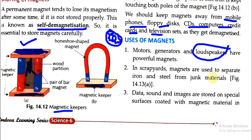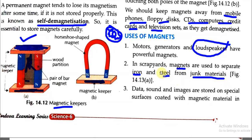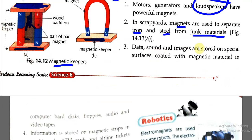In scrap yards, magnets are used to separate iron and steel from junk material. Data, sound, and images are stored on special surfaces coated with magnetic material — in computer hard disks, floppy disks, audio and video tapes. All these things are stored on special surfaces coated with magnetic material.